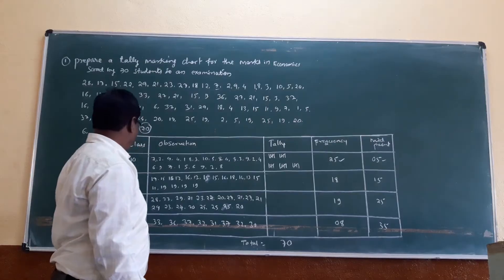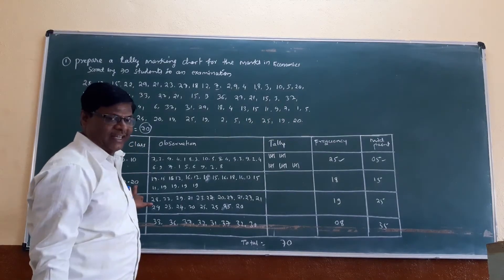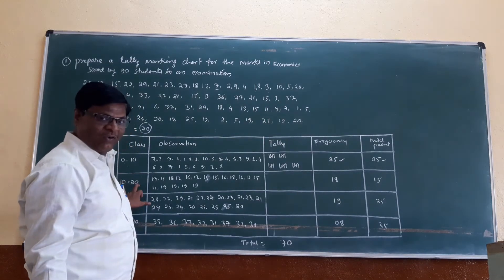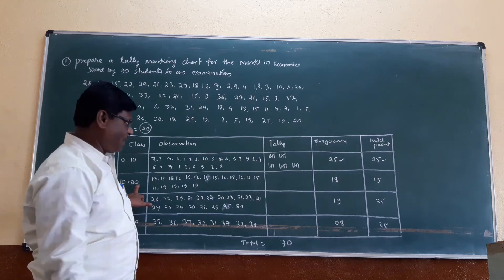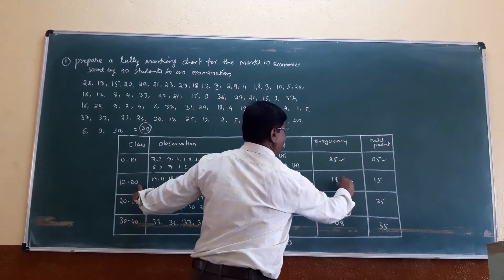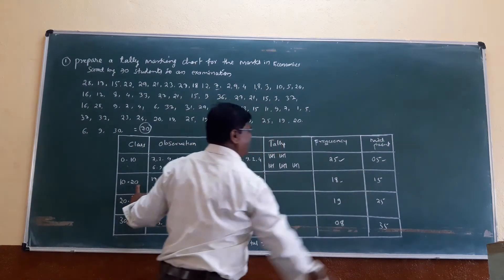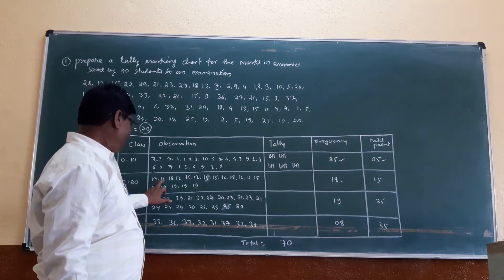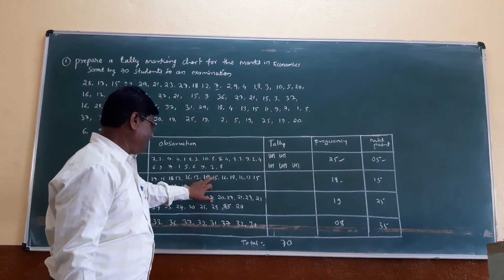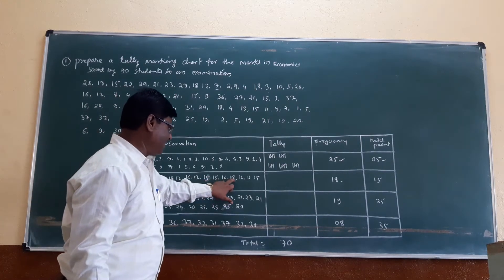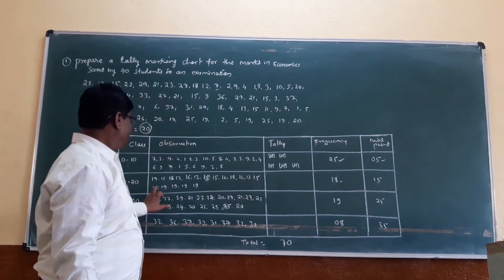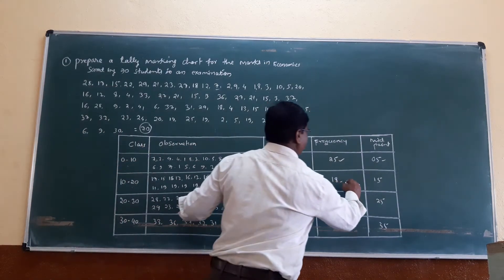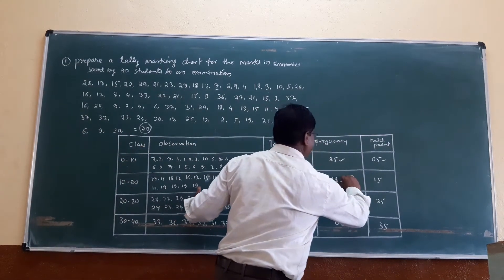The second class is 10 to 20. Its frequency is 18. Counting: 1, 2, 3, 4, 5, 6, 7, 8, 9, 10, 11, 12, 13, 14, 15, 16, 17, 18. The frequency is 18.